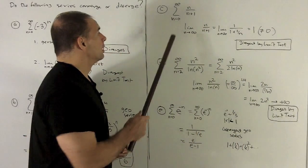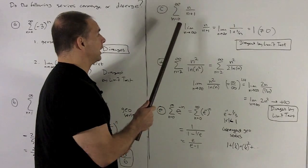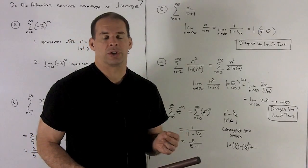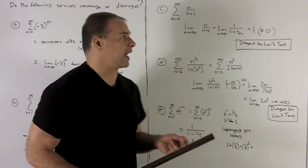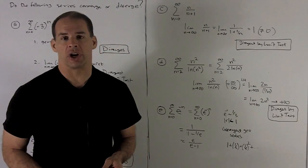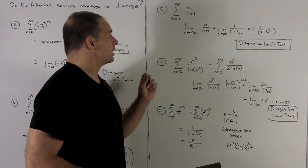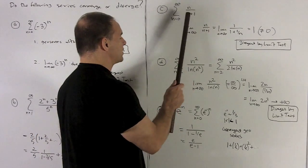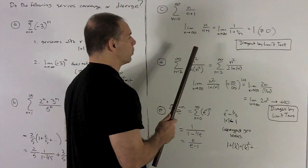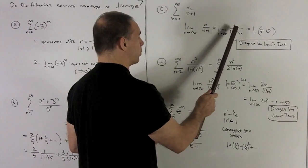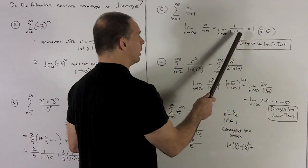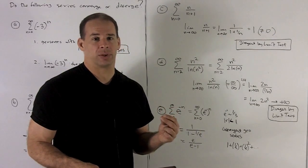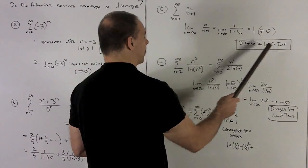Next, the sum from n equals 0 to infinity of n/(n+1). It's not telescoping (no way to get a minus sign) and it's not geometric. So we apply the limit test. Taking the limit of n/(n+1) as n goes to infinity — divide top and bottom by n to get 1/(1 + 1/n), which goes to 1. Since this limit equals 1, not 0, the series diverges by the limit test.